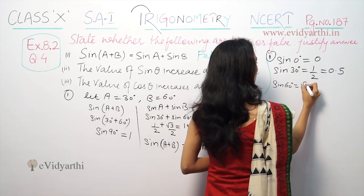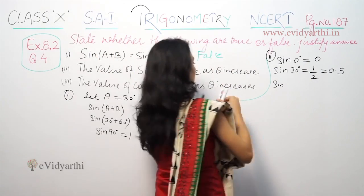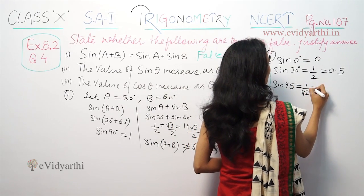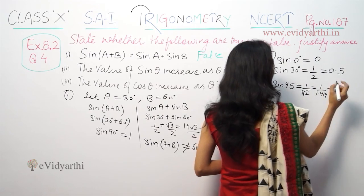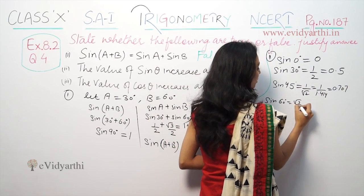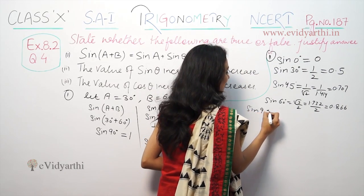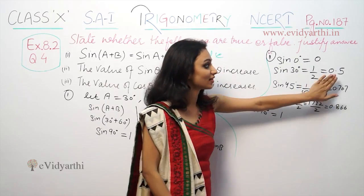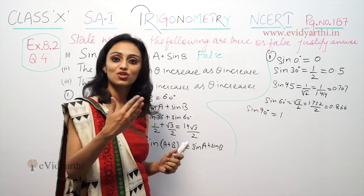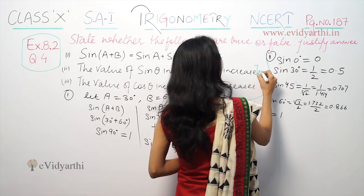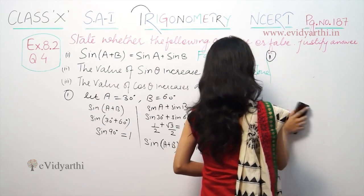Sin 45° is 1/√2, that means 1/1.414, so approximately 0.707. Sin 60° is √3/2, that means 1.732/2, so approximately 0.866. Sin 90° is 1. So the values go: 0, 0.5, 0.707, 0.866, 1 — the value actually increases as the angle increases. So this statement is true.